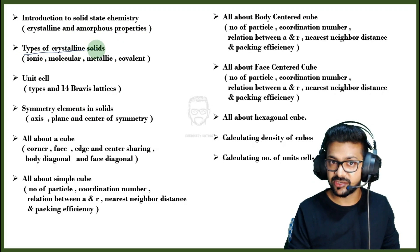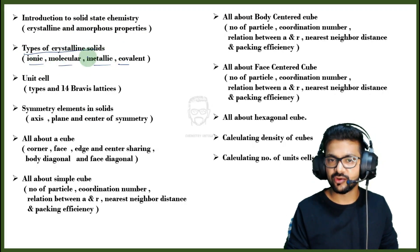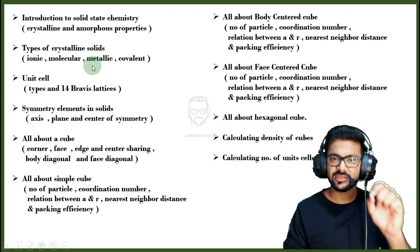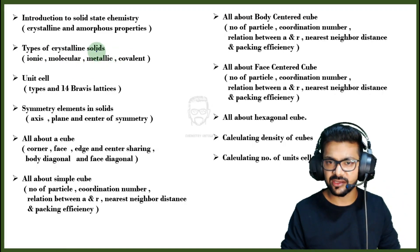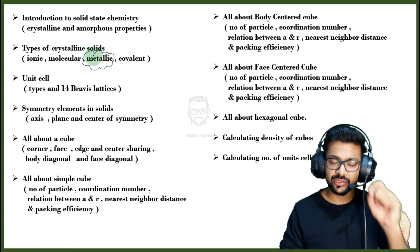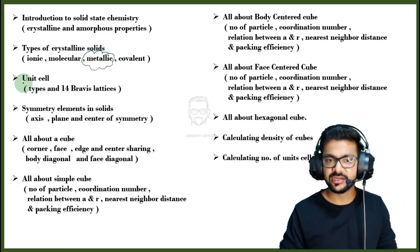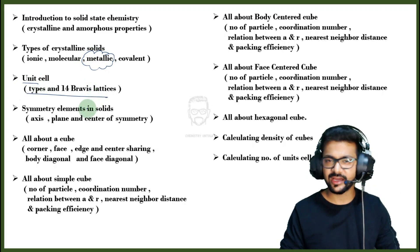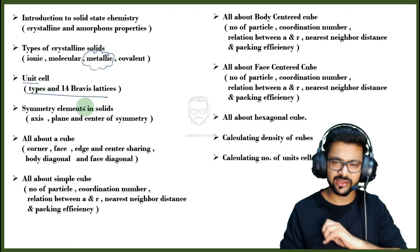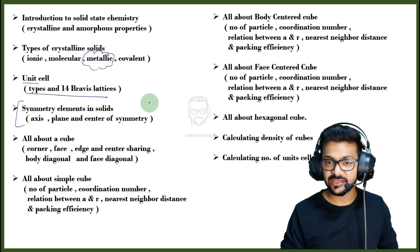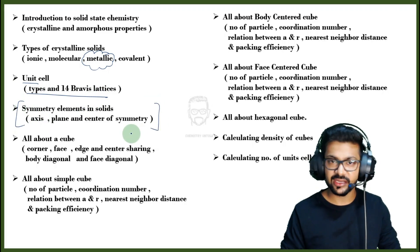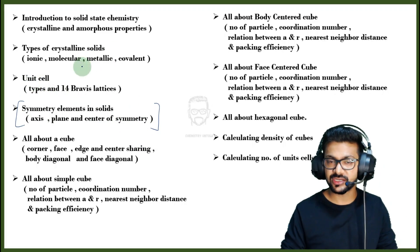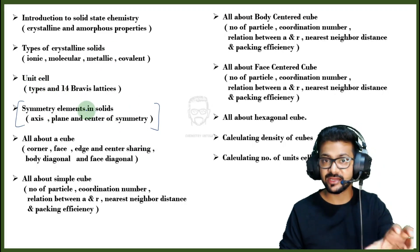The types of crystalline solids — ionic, molecular, metallic, covalent — are all discussed in detail. I have covered units and different types, including structures and symmetry elements, which are especially important for higher education students and particularly in JEE Main and Advanced.